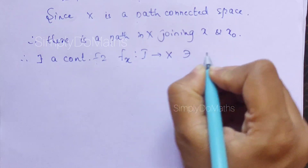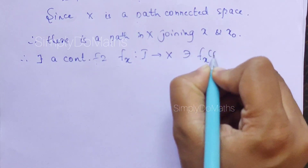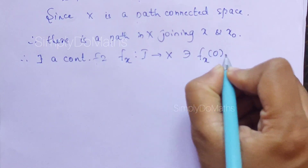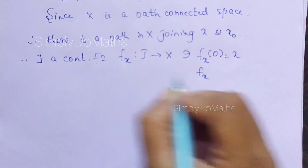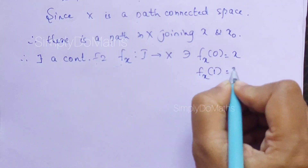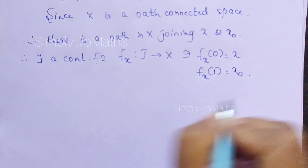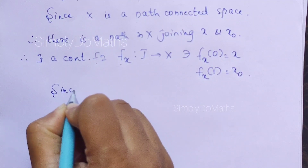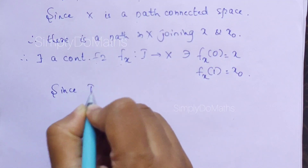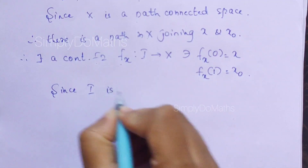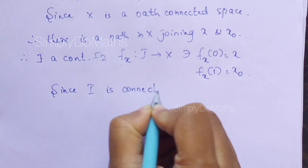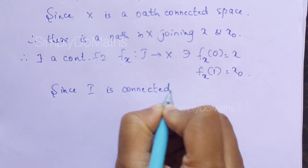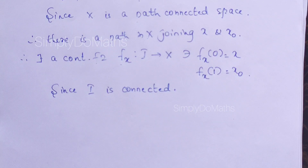Such that f_x(0) = x and f_x(1) = x₀. As you know, I is always connected, because I is nothing but the unit interval, the closed interval 0 to 1.